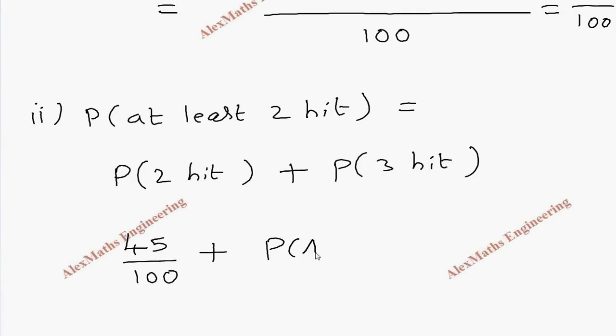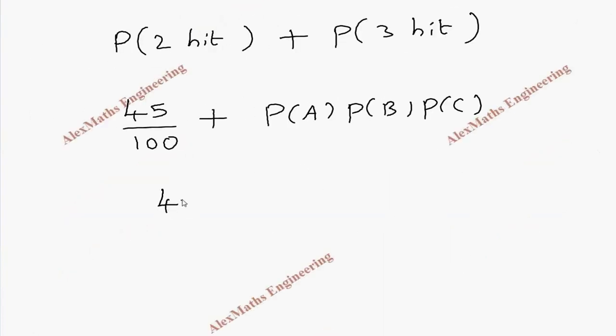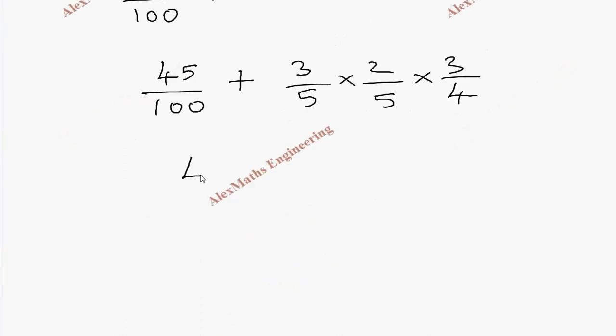And here all the 3 hit is P of A into P of B into P of C. This is 45 by 100. This is 3 by 5 into 2 by 5 into 3 by 4. The denominator is 100. 3 times 2 is 6, 6 times 3 is 18. Now adding the numerator we get 63 divided by 100.